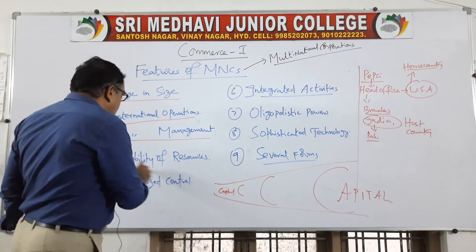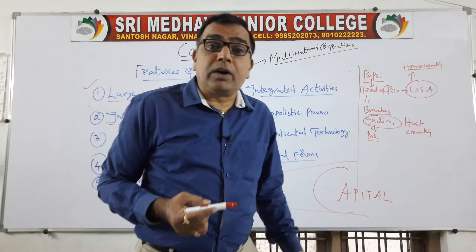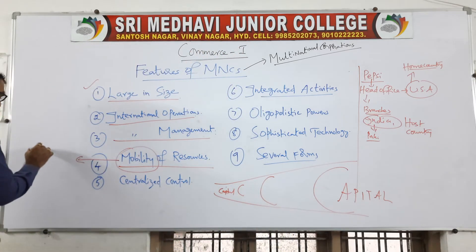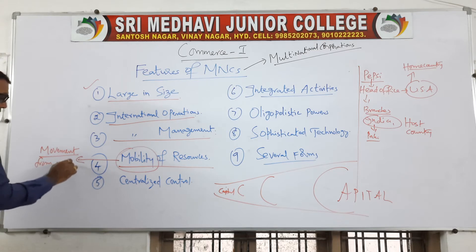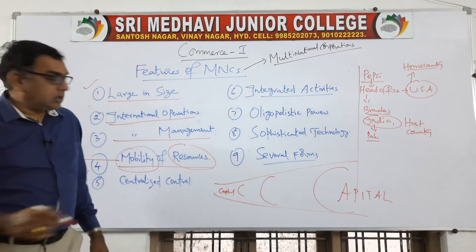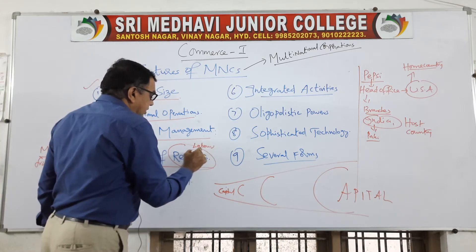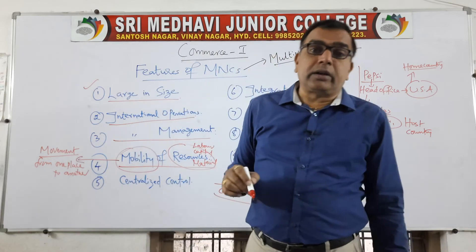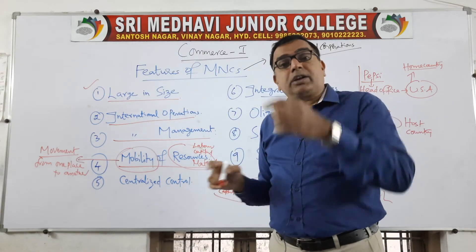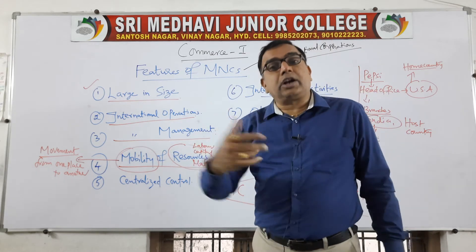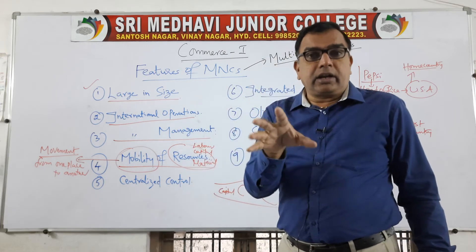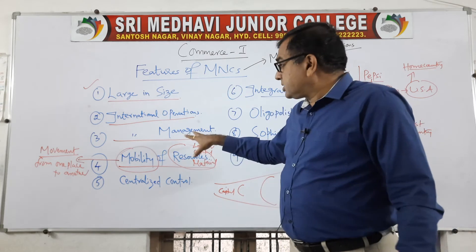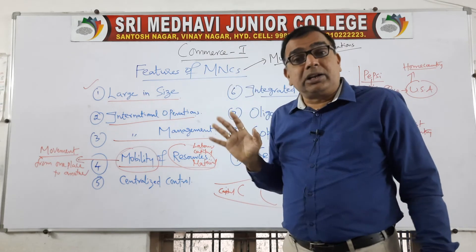Next is mobility of resources. Mobility means moving from one place to another place. Resources like labor, capital, and material are transferred from one country to another country — multinational corporations have that capacity. This is not possible for normal companies, because in order to mobilize these resources you require a lot of money. That investment cannot be made by ordinary Indian companies or normal public companies; this capacity is held by multinational corporations only.